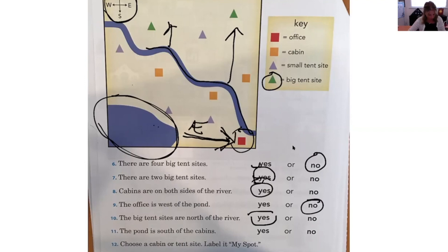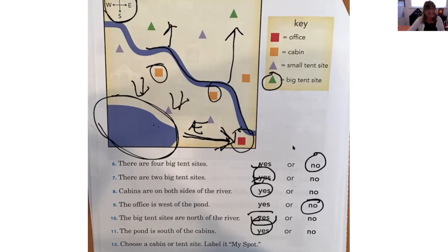Number ten: the big tent sites are north of the river. Here's the river — this squiggly line — and the big tent sites are the green ones, right up here. Which way is up? North. Number eleven: the pond is south of the cabins. Here's the cabins and the pond is down — so is that true? Yes, that is true. Number twelve: choose a cabin or tent and label it "my site." I'm going to pick my cabin — this one's mine, labeled "my site" — because I like to be near the river and hear those sounds, and I got a big tent for my family to come stay with me.